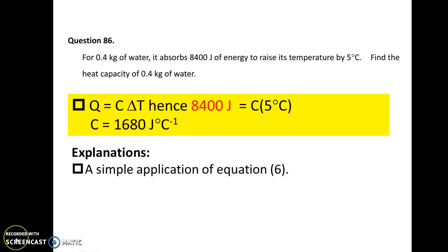Question 86. Simply apply the formula Q equals C delta T, where Q is 8400 J and the temperature rise delta T is 5 degrees Celsius. So the answer is 1680 J per degree Celsius. Don't forget to write the correct unit.